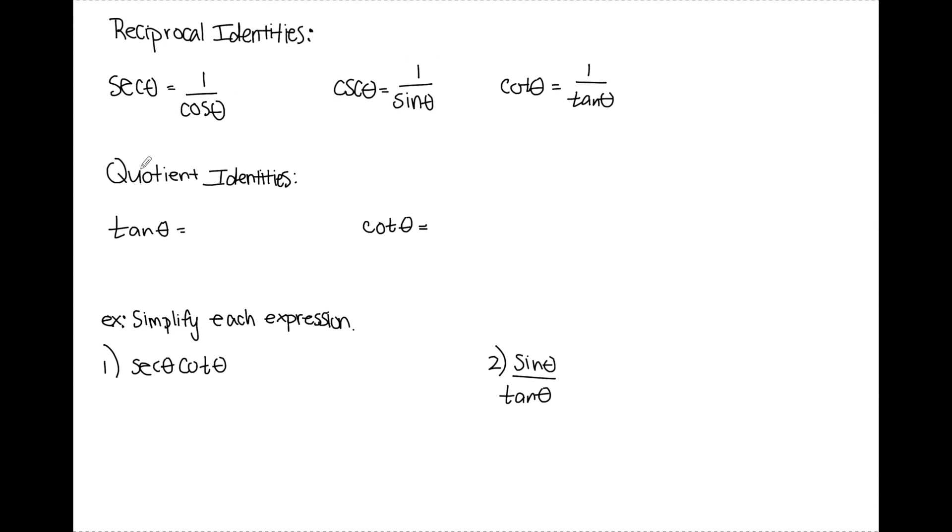My quotient identities go for tangent theta and cotangent theta. Each of these trig functions can be written in terms of sine and cosine. So tangent theta is equal to sine theta over cosine theta, and cotangent theta is equal to cosine theta over sine theta.